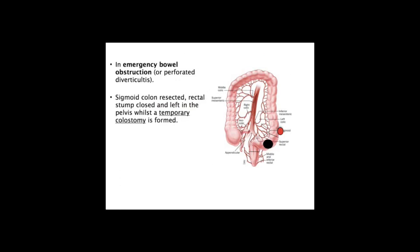If the rectal tumour is less than four centimetres from the anal verge, you must perform an abdominoperineal resection - a dramatic operation requiring complete removal of the anus and a permanent colostomy, as shown on the diagram. Hartmann's procedure is an emergency procedure for when the tumour has caused complications such as obstruction or perforation, also used in diverticulitis. The sigmoid colon is resected, a temporary colostomy is formed and the rectal stump closed. Later, once safe, you return to reform the anastomosis.